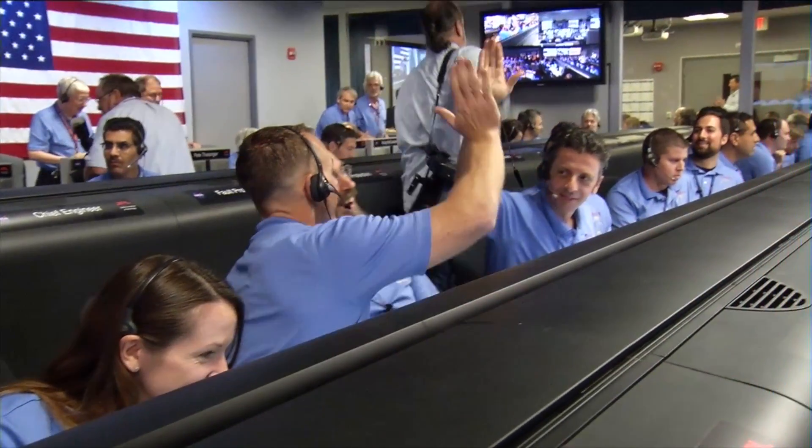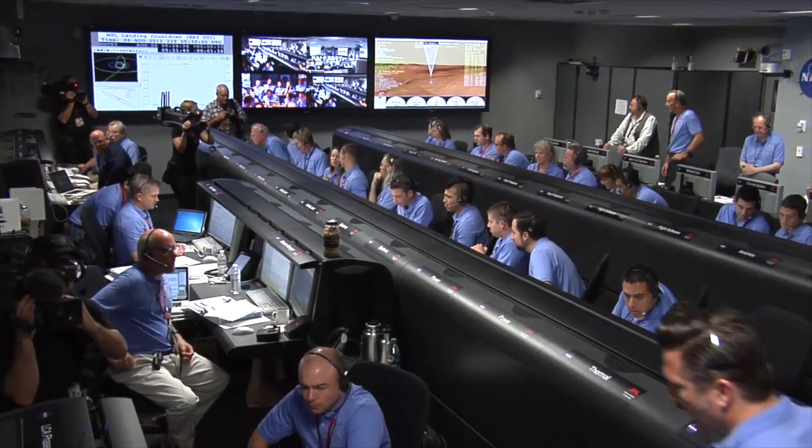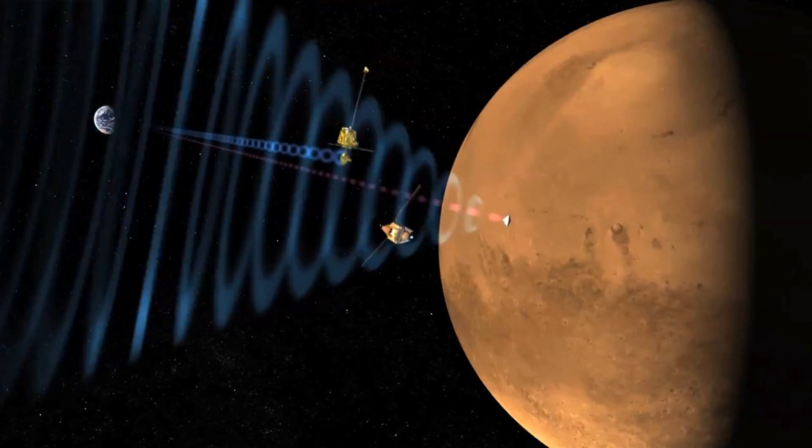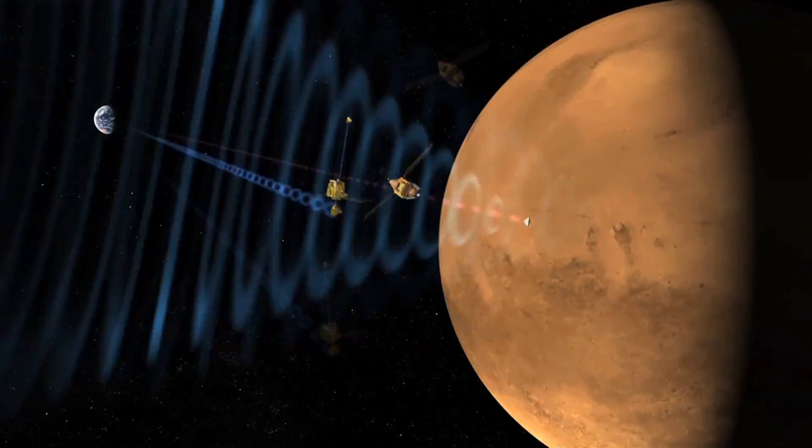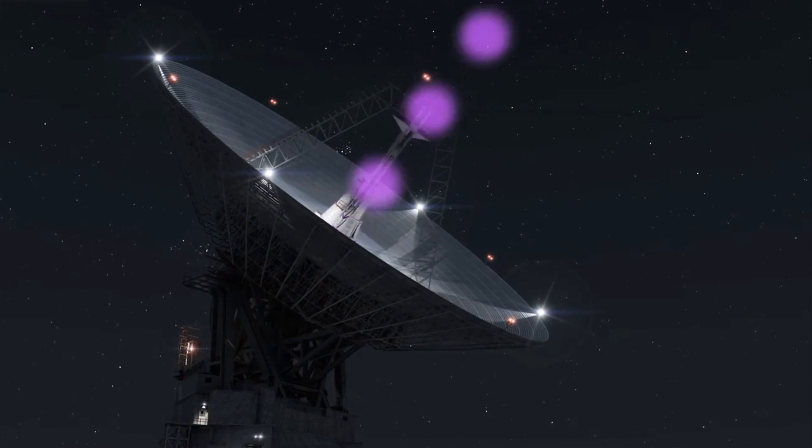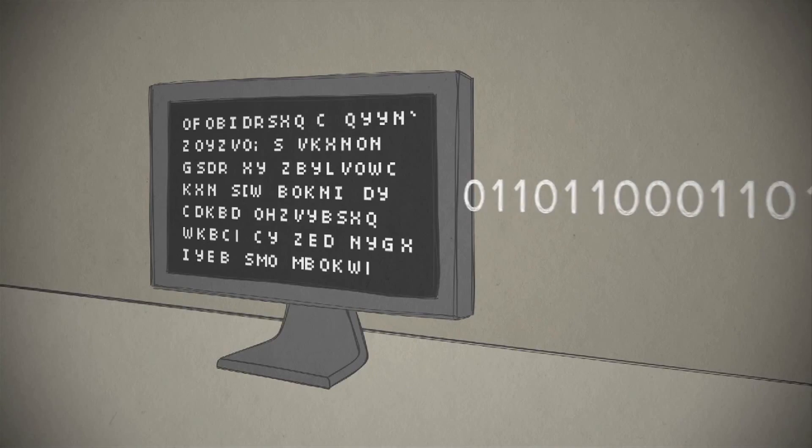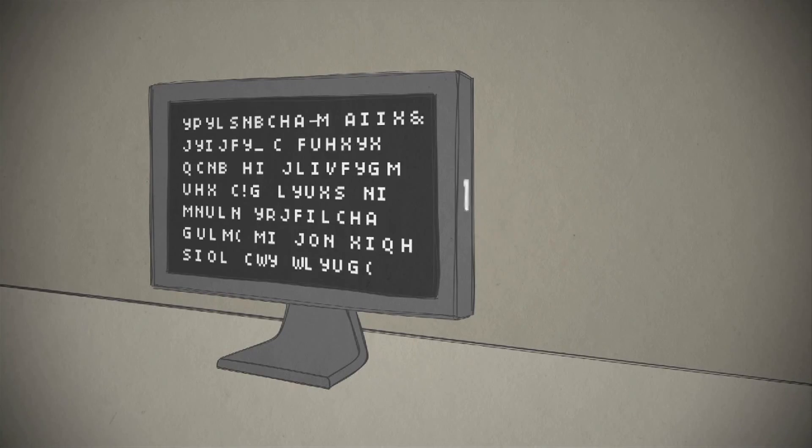JPL uses Coverity to test all of the software that controls the flight of the Curiosity rover and all of the onboard functions. That's over 2 million lines of code. And a critical software defect in this software could literally mean the difference between success or failure of this mission.